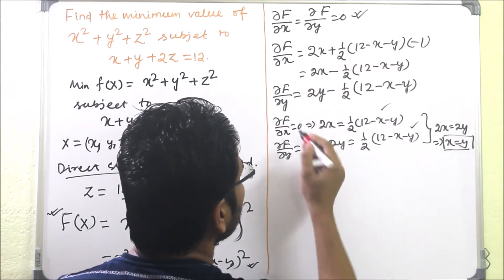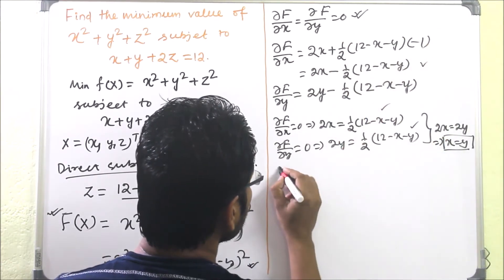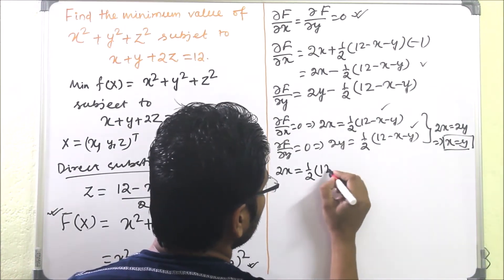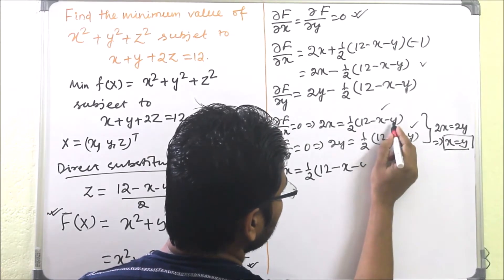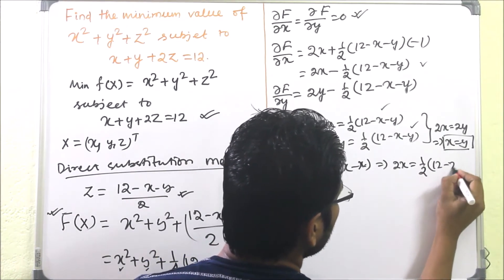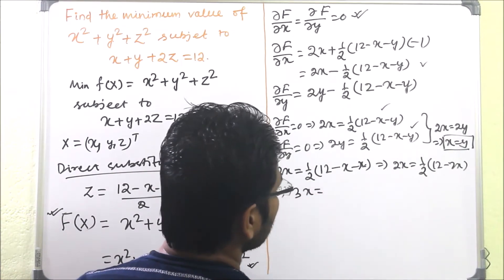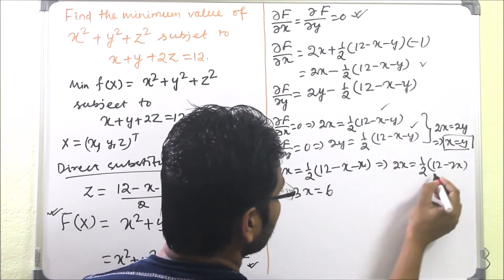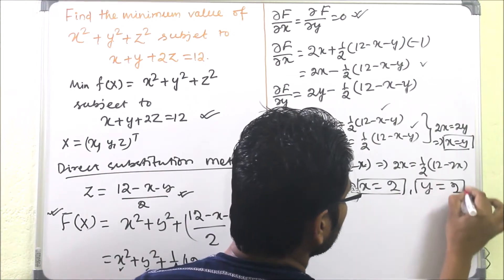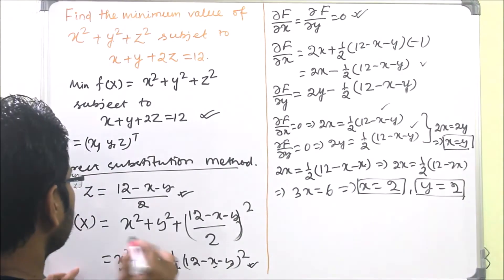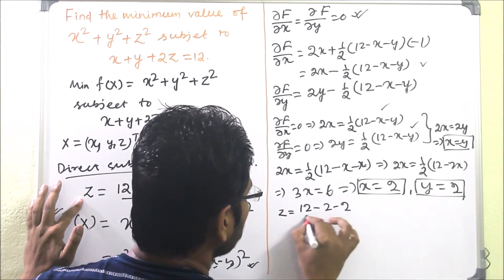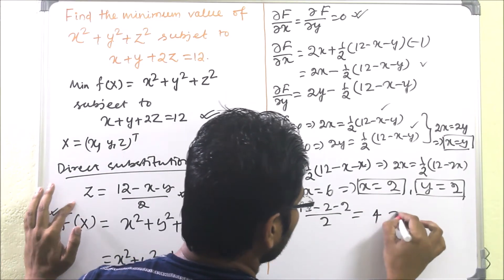To find the numerical value, we substitute y = x into the equation: 2x = (1/2)(12 − 2x), giving 3x = 6, so x = 2, and therefore y = 2. Then z = (12 − 2 − 2) / 2 = 4. So z = 4.